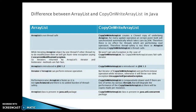In the case of CopyOnWriteArrayList, we won't get any ConcurrentModificationException. This means the iterator obtained from CopyOnWriteArrayList is a fail-safe iterator. While iterating elements in CopyOnWriteArrayList, if you do some kind of addition or deletion in the list, you will not get any ConcurrentModificationException. Additionally, ArrayList was introduced in JDK 1.2 (Java 2), but CopyOnWriteArrayList was introduced in JDK 1.5 (Java 5).